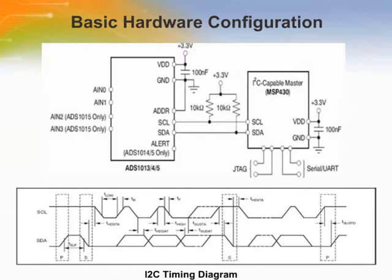The ADS1013/14/15 communicate with the master, also known as the microcontroller, through an I2C interface. The master provides a clock signal on the SCL pin and data is transferred via the SDA pin. The ADS never drives the SCL pin. The first byte sent by the master should be the ADS address followed by a bit that instructs the ADS1013 to listen for a subsequent byte. The second byte is the register pointer, and the third and fourth bytes sent from the master are written to the register indicated in the second byte.